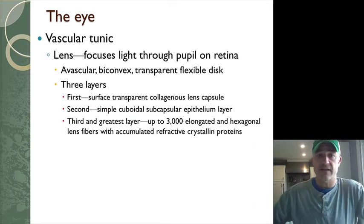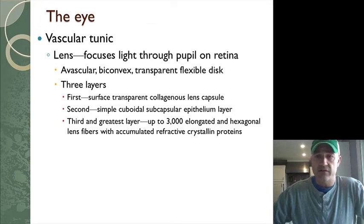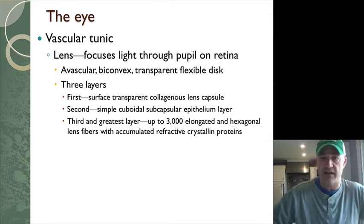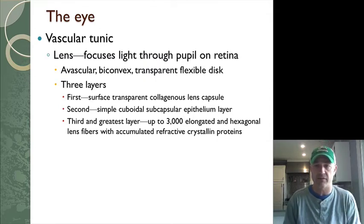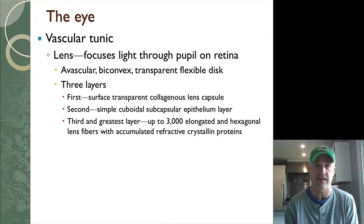The lens is in the center — it is avascular and transparent, with multiple layers. It has a capsule surrounding it and a large amount of a protein called crystallin that accumulates to form the lens.